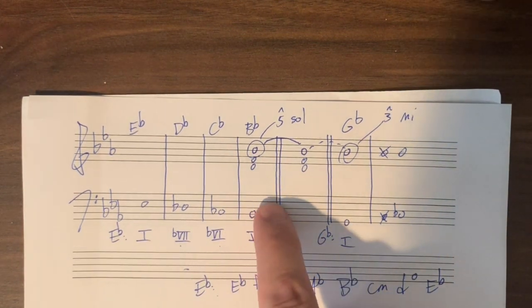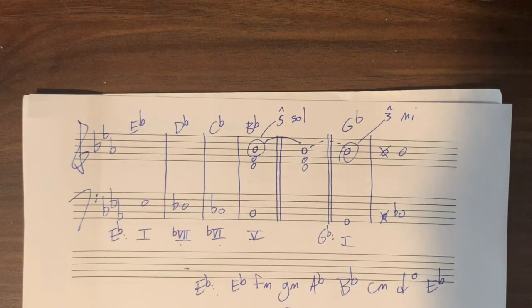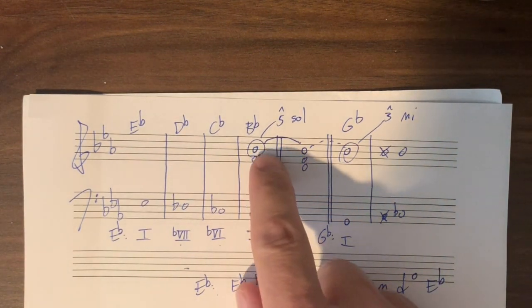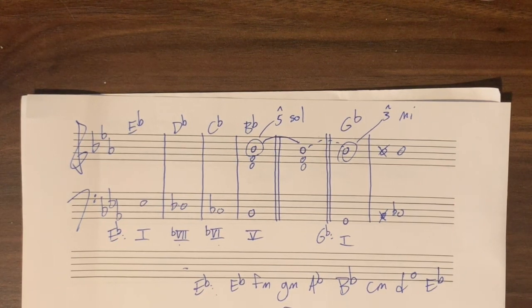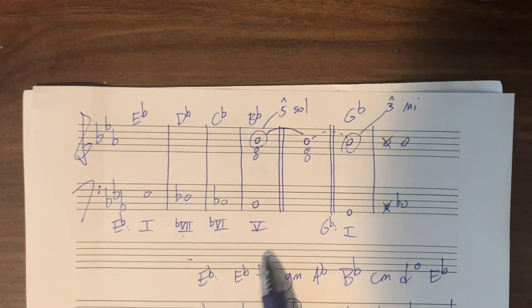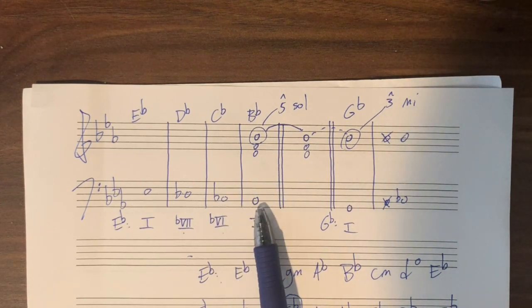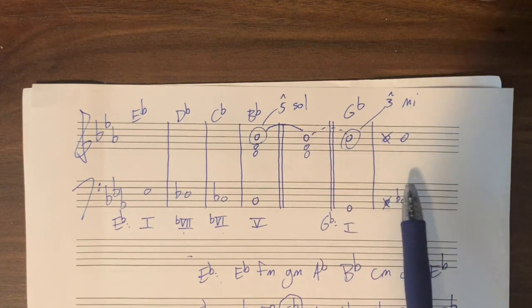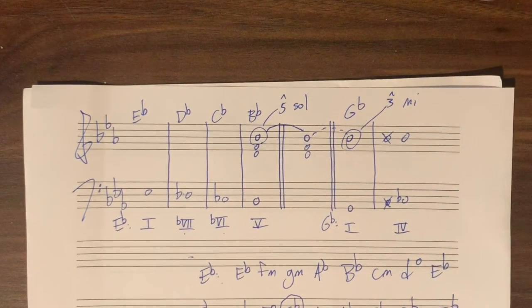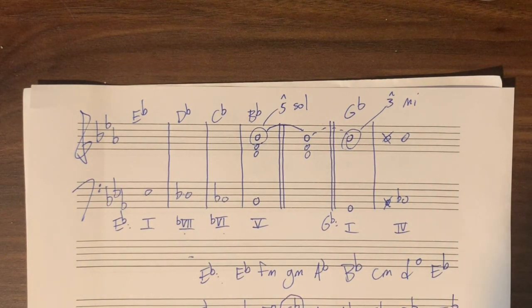What is accomplished by this modulation is that with no preparation, no warning, no getting you ready for it, all of a sudden you have to reinterpret this B flat as part of a G flat chord. Let's hear it a few more times. So here we are, totally comfortably in the key of E flat, and here's this held chord.